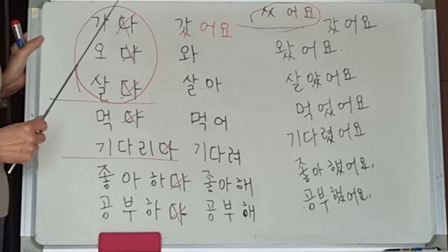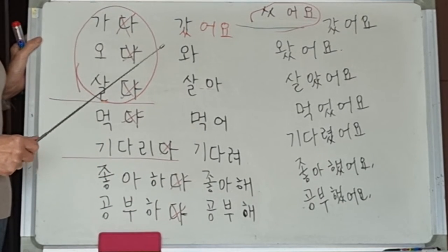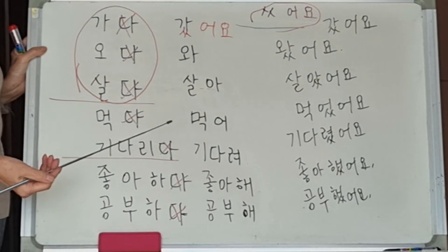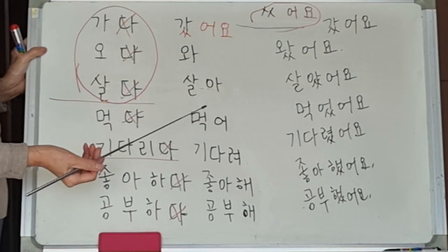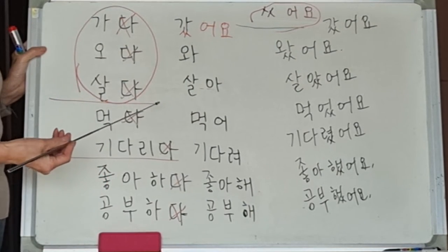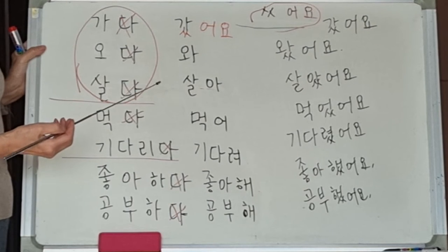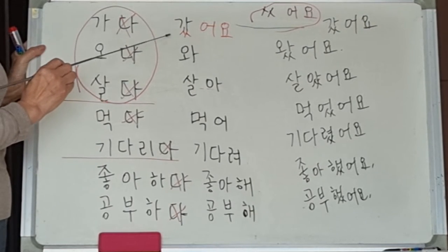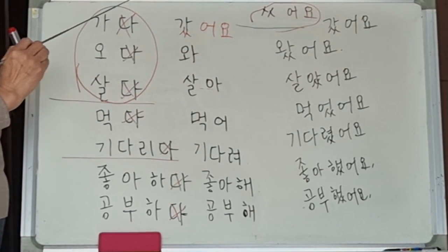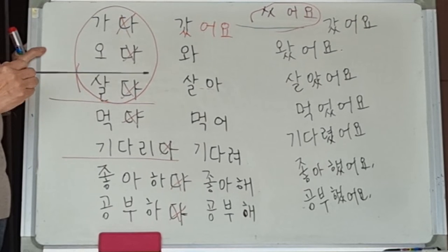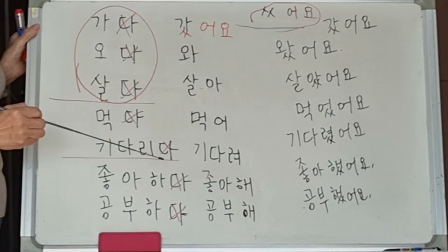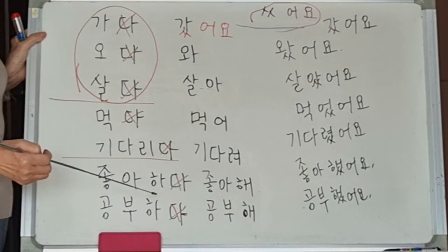Unlike English, which has so many irregulars going from present to past — go/went, come/came, eat/ate — in Korean, the past tense is very easy from the present tense. There is only one rule without any exception. So you will enjoy learning this.